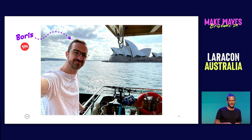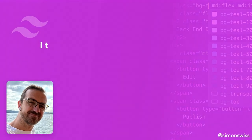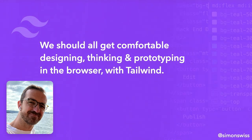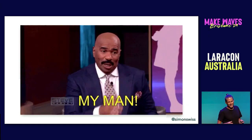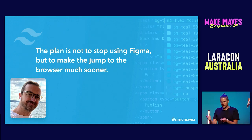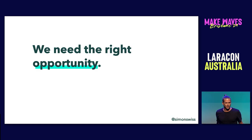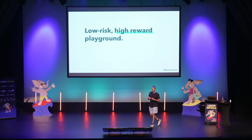While we're having this conversation, Boris enters — the co-founder of Thinkmill and head of product design. Inspired by his commute to work, he says: 'Simon, I've been thinking about Tailwind a lot — I think I'm ready. I think we should train the whole design team. I want everyone to be comfortable designing, thinking, and prototyping in the browser with Tailwind.' The plan is to not stop using Figma, but to move to code a little bit sooner. To train the team, we need a safe, low-risk, high-reward space to foster a learning environment.